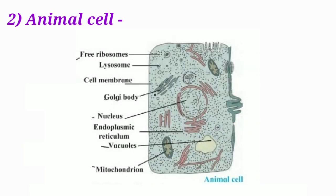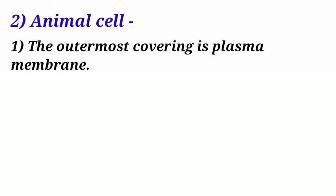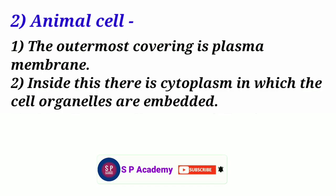Animal cell. The outermost covering is plasma membrane. Inside this there is cytoplasma in which the cell organelles are embedded.